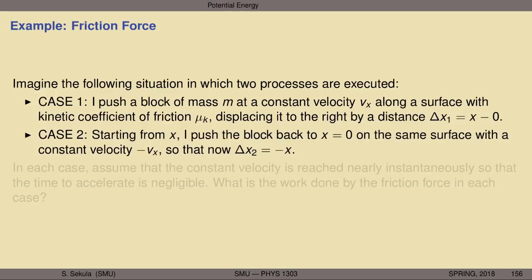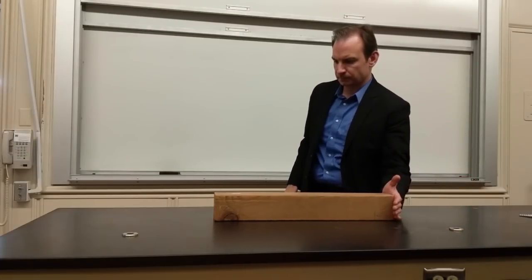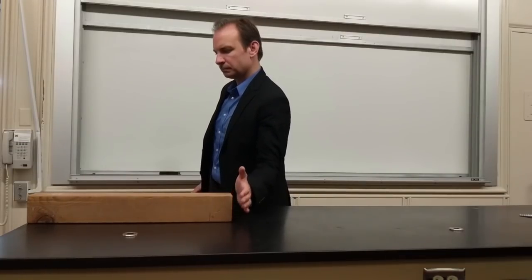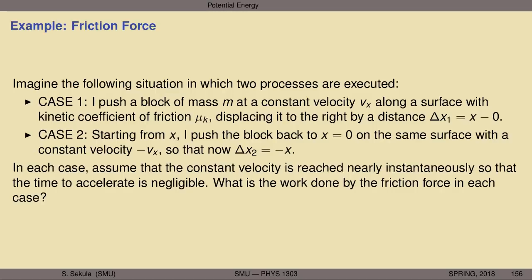Case two starts from the end point of the journey at position x. I push the block back, moving it at the same constant speed but in the opposite direction — constant speed, opposite velocity — back to its starting point x equals zero, on the same surface with the same coefficient of kinetic friction. Delta x2, the displacement for case two, is negative x: starting at x, ending at zero, so zero minus x equals negative x. We assume constant speed is reached nearly instantaneously. The question: what is the work done by friction in each case, and what does this tell us about friction?